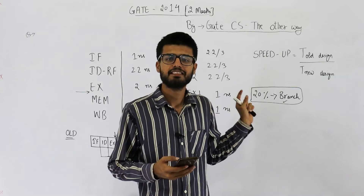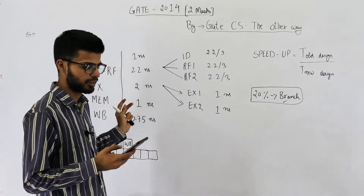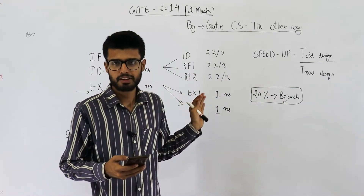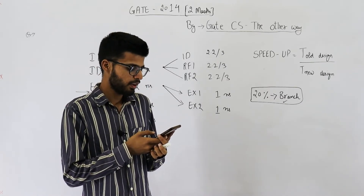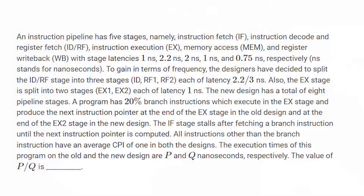The main job here is reading the statement. Once you have read the statement, it's going to take like a minute or so. An instruction pipeline has five stages, namely IF, IDRF, EX, MEM, and WB. You can just see their full forms. With stage latencies: 1 nanosecond, 2.2 nanoseconds, 2 nanoseconds, 1 nanosecond, and 0.75 nanosecond respectively.